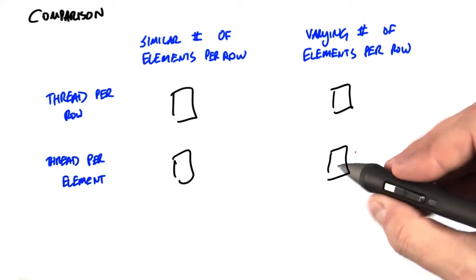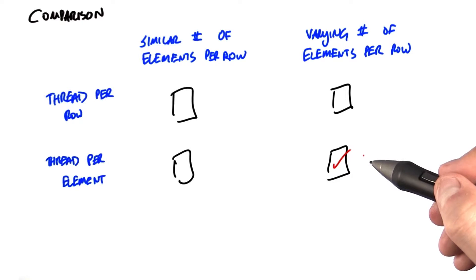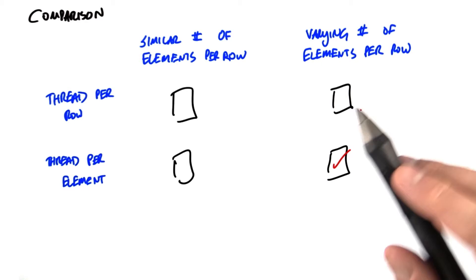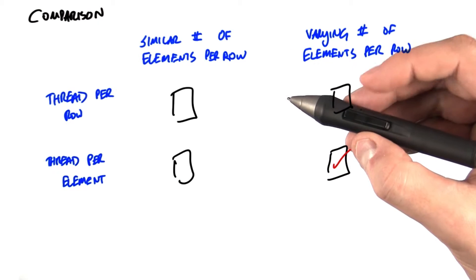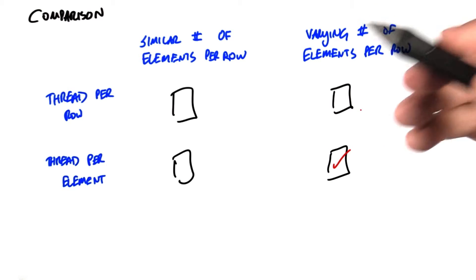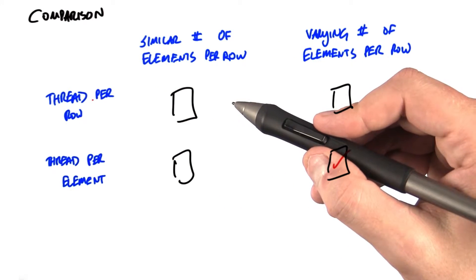So of these two methods, thread per element is probably a better choice. It's completely insensitive to the structure of the matrix. But on the other hand, if our matrices have roughly the same number of elements in each row, which is better? Well, now there's really no load imbalance issues, and that's the primary disadvantage with the thread per row approach.